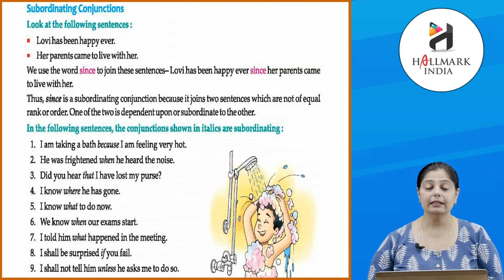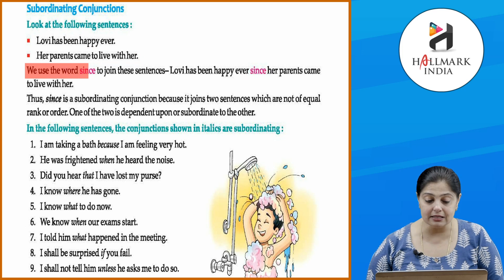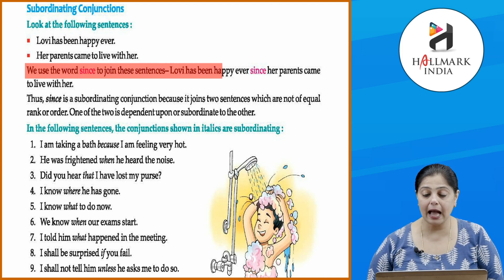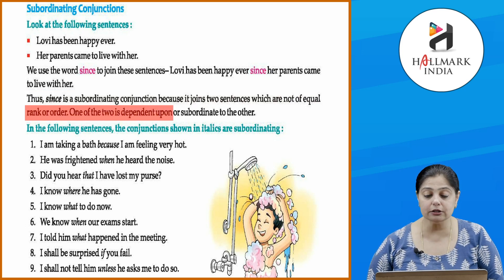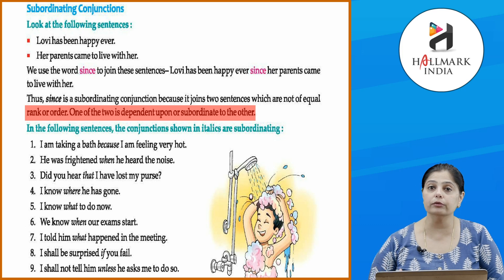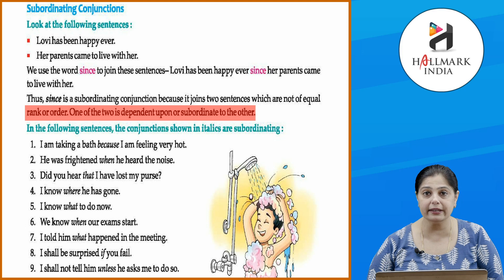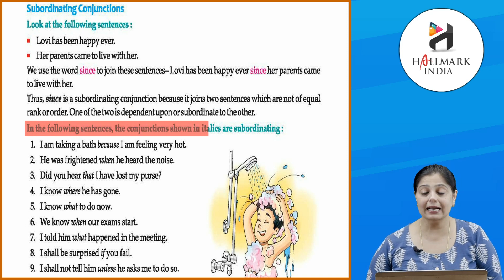Now let's look at subordinating conjunctions. Consider: 'Lovi has been happy ever since her parents came to live with her.' The word 'since' is a subordinating conjunction because it joins two sentences which are not of equal rank or order — one is dependent upon or subordinate to the other. Individually, the dependent clause does not make sense on its own; you need to join it with a main clause.